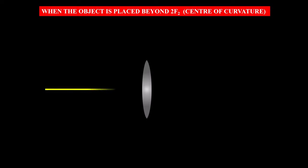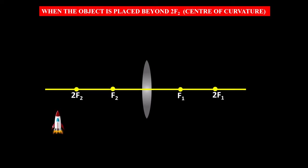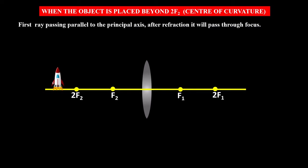Now let us find where the image is formed when the object is placed beyond 2f2. Let this be the lens and principal axis, with points f1, f2, 2f1, and 2f2. Let the object be placed beyond 2f2. The first ray passing parallel to the principal axis, after refraction, will pass through the focus.